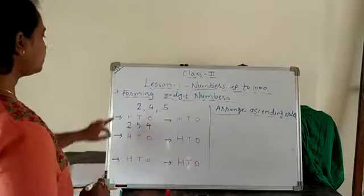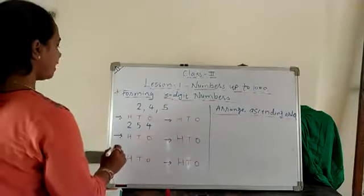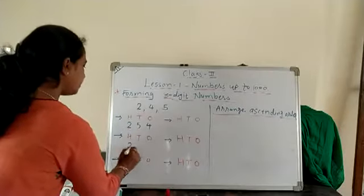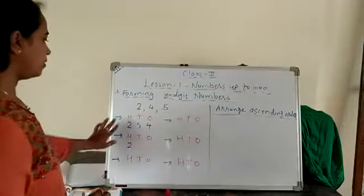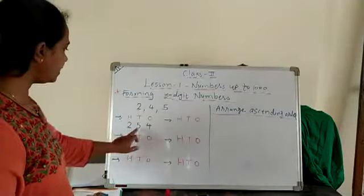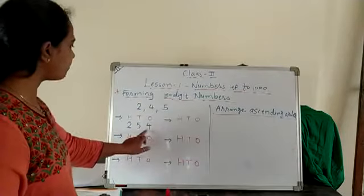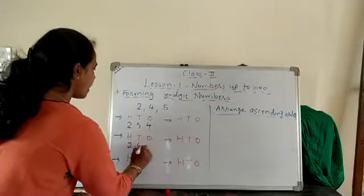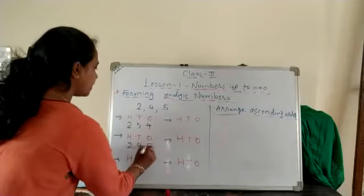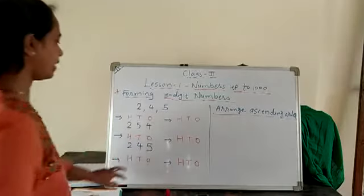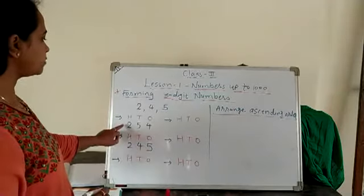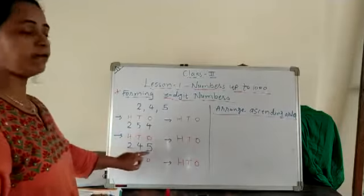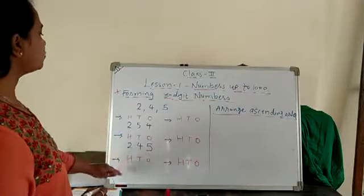Then next, 2 is in the 100s place — same — and interchange the two remaining numbers. So in the 10s place write 4, and in the 1s place write 5. So the first number is 254 and the second number is 245.